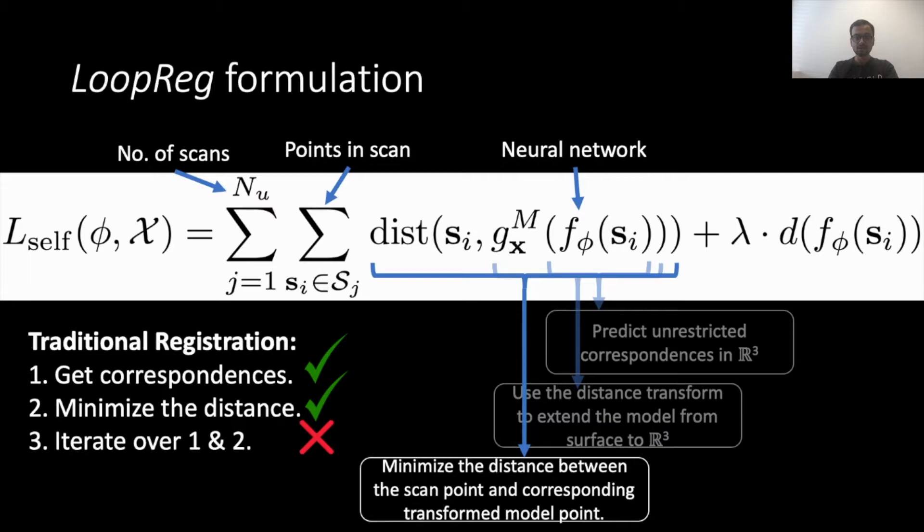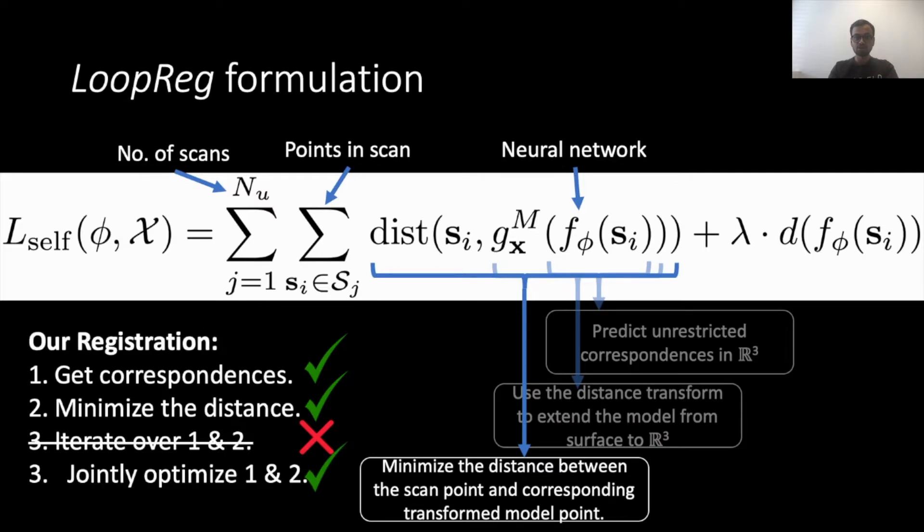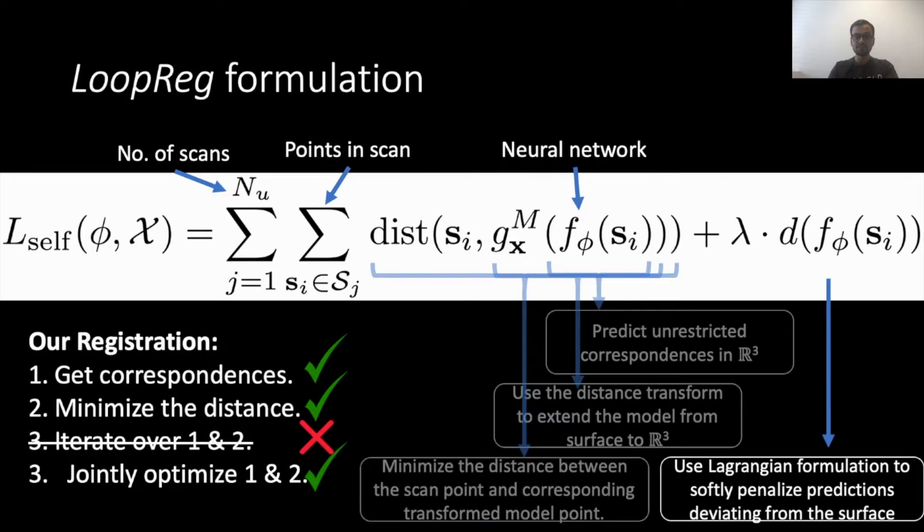It is important to note that unlike previous two-step optimization for correspondences and model parameters, we can jointly optimize over both. We softly penalize the network predictions that deviate from the model surface as gradients away from the surface might not be reliable.